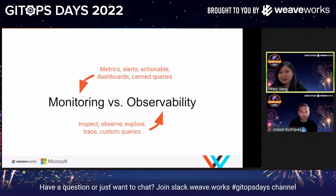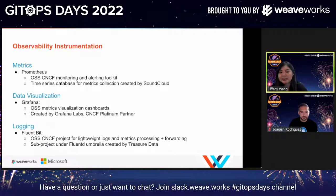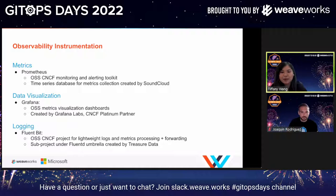Monitoring and observability go hand in hand, where observability is arguably the superset. Observability allows you to inspect, observe, trace, and write custom queries to understand how your system is performing. With monitoring, the metrics, alerts, dashboards, and queries that you set up need to be actionable. There are many tools available to accomplish metrics, data visualization, and logging, and still more components of an observability stack, including tracing. But in today's workshop, we're going to be using Prometheus for metrics collection. Prometheus is an open source CNCF project created by SoundCloud for monitoring and alerting, and it stores metrics as time series data.